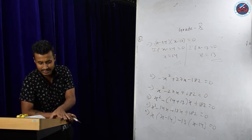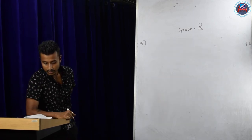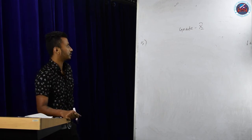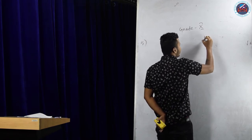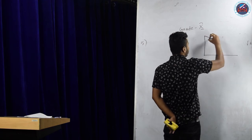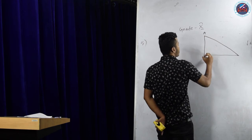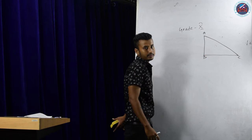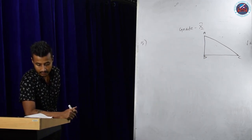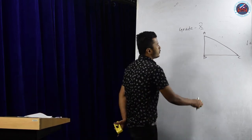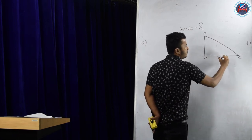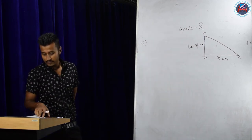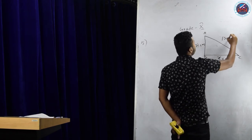Question number 5 is a word problem: the altitude of a right-angled triangle is 7 cm less than its base. If the hypotenuse is 13 cm, find the other two sides. The key information is that it is a right-angled triangle. AB is the altitude, BC is the base, and AC is the hypotenuse. Since the altitude is 7 cm less than the base, if I take the base as x cm, then the altitude is x minus 7 cm. The hypotenuse is given as 13 cm.